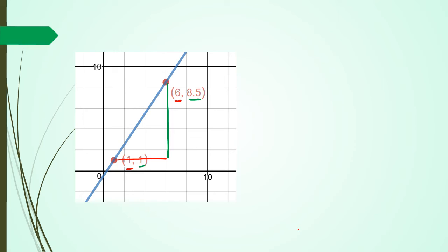So with my run, it's going to be 6 minus 1, which equals to 5. And then for my rise, it's going to be 8.5 minus 1, which equals to 7.5.